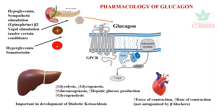Apart from its metabolic role, glucagon has important cardiac actions. It increases the force and rate of contraction of the heart, and notably, this effect is not antagonized by beta blockers. Therapeutically, it is used to revert insulin-dependent hypoglycemic emergencies.